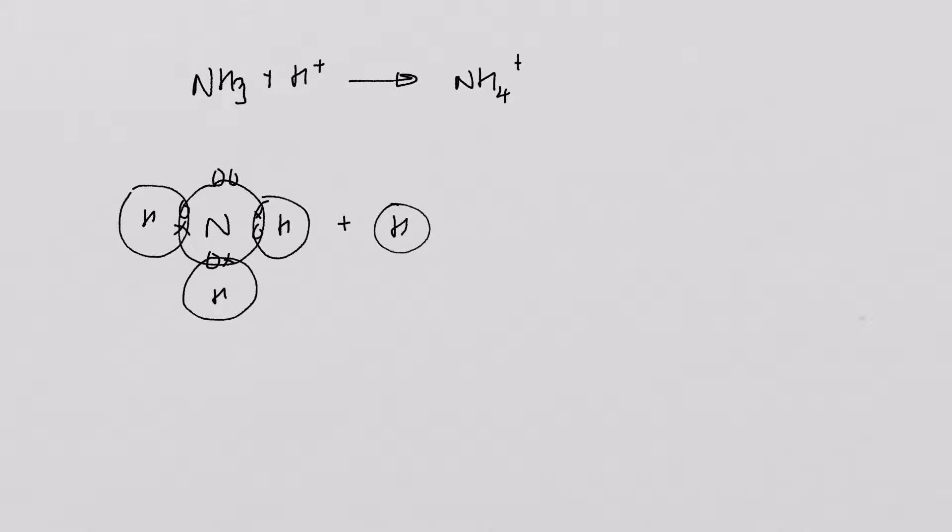And you'll notice here, nitrogen has what's called a lone pair of electrons. They're non-bonding, and they're there. Hydrogen has no electrons in its outer shell. So bearing those two in mind, we can draw this.